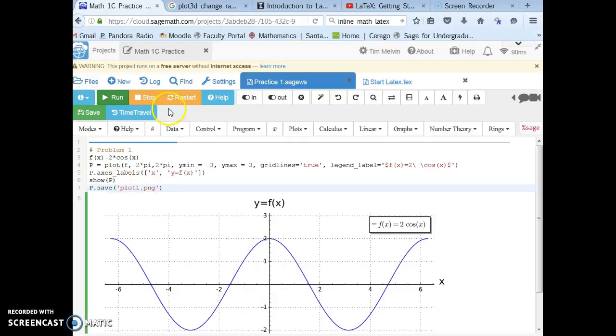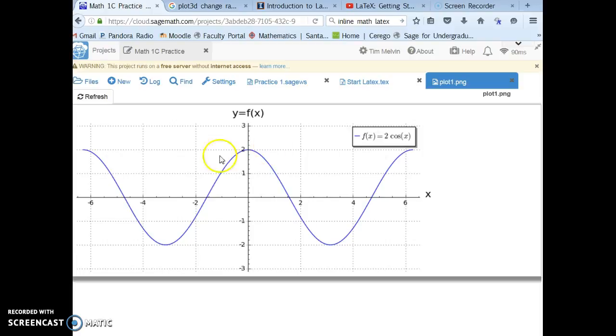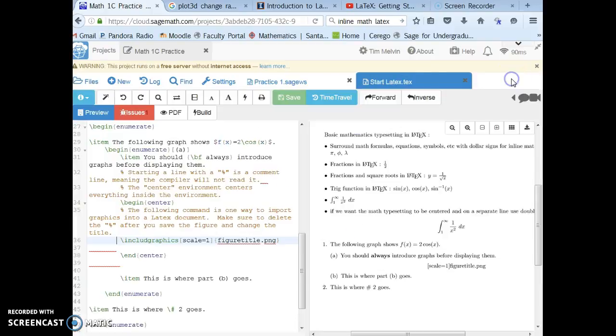I'm going to run this and there won't be anything different over here. Notice I called this plot1. If I go over to files in the workbook, now there's a plot1. If I click on that, there we go. I generated a PNG. I don't need this, I'm going to click that out. I'm going to go back to the LaTeX file and just change this to plot1.png.